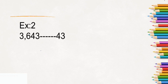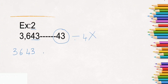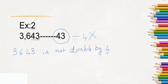Look at another example. The next number is 3,643. What do we have to do? We check the last two digits, which is 43. Is 43 divisible by 4? No — 4 times 10 is 40, 4 times 11 is 44 — so 43 is not divisible by 4. That means 3,643 is not divisible by 4. Whether you have to check if a number is divisible by 4 or not, look at the last two digits. If those digits are divided without leaving any remainder, the whole number can be divided by 4; if not, the number cannot be divided by 4.